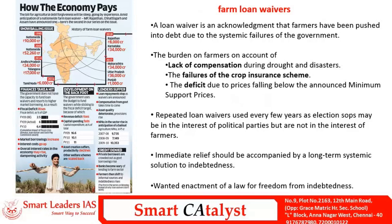The systemic failures in the agricultural economy have pushed farmers towards indebtedness. This loan waiver is nothing but an acknowledgement that the government has failed in providing structural and functional reforms in the agricultural system. Apart from the factors discussed earlier, there are a few other specific factors contributing to farmer distress.